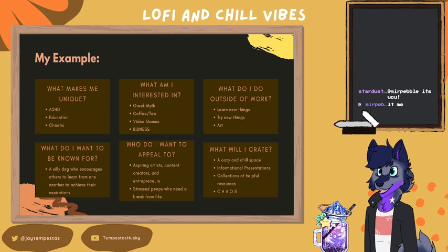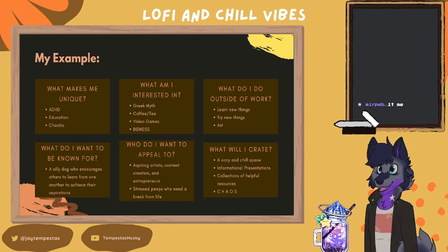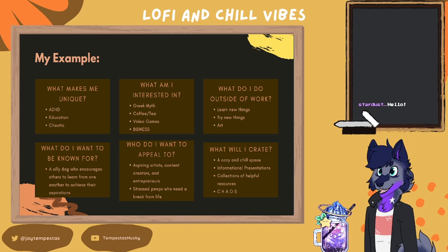Going to the core questions: what do I want to be known for? I just want to be known as a silly dog — it's just what I do. Who do I want to appeal to? Aspiring artists, content creators, entrepreneurs, and also just stressed people who need a break from life, because life is too stressful. I want to chill with people — hence why I went for a really cozy vibe with my stream overlays. And what will I create? A cozy and chill space, informational presentations, collections of helpful resources, and chaos — because I am chaos.